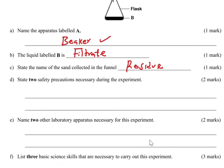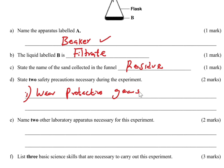Part D: state two safety precautions necessary during this experiment. Safety precautions is an open question, so you can give any correct safety precaution. For example, you can say wear protective gears — always wear a lab coat, safety goggles, and gloves to protect your skin and eyes from chemicals and glass breakage. Another safety precaution: handle glass ware carefully to avoid breakages.